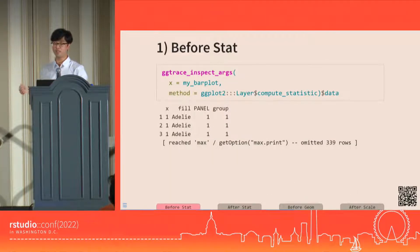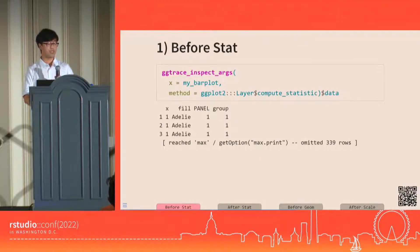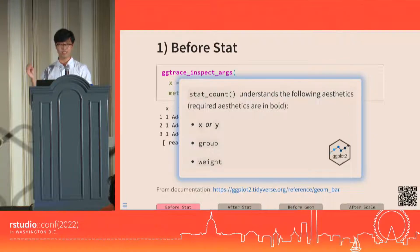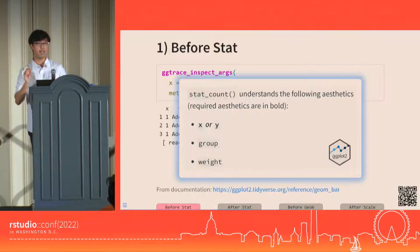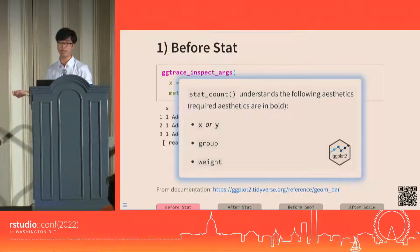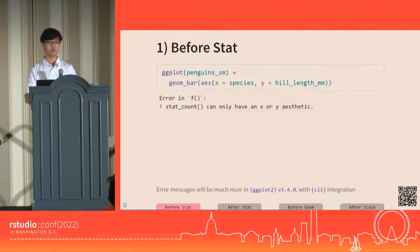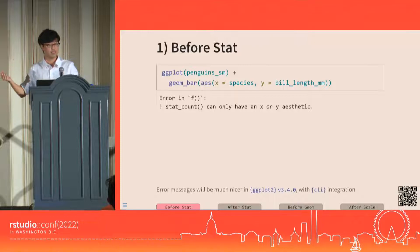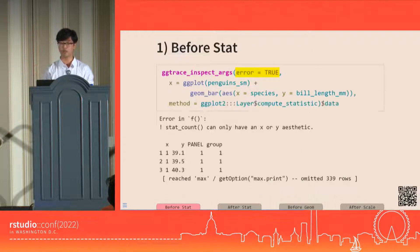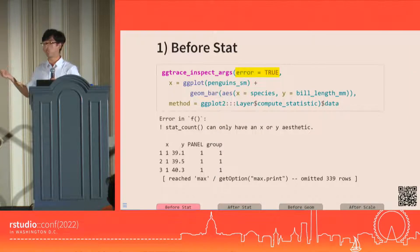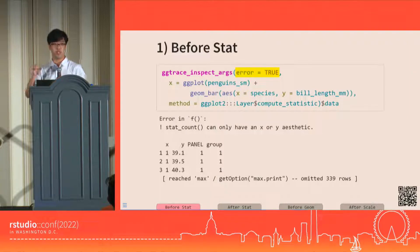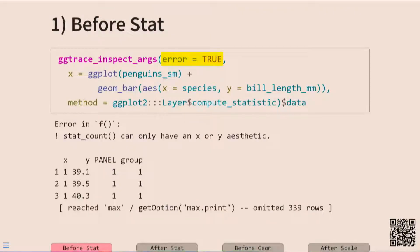But the real significance of the before stat data is that it validates the layer's choice of stat. Our before stat data has a column for x and that satisfies the layer's count stat, which requires either an x or y aesthetic, as we see from the documentation. If we specify both x and y like this, then the plot fails to build and it errors specifically at stat_count. We can set error equals true in our ggtrace function to debug the layer's data. Here we can see the reason why. It's because both the columns x and y are present when the stat goes in to look at the data.